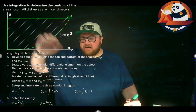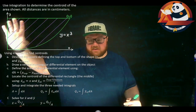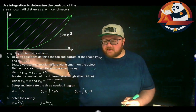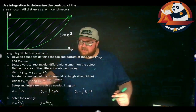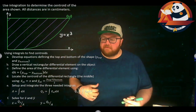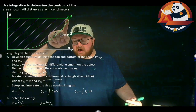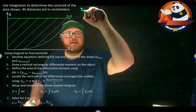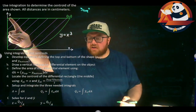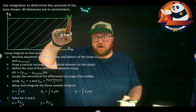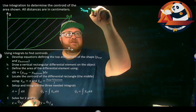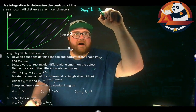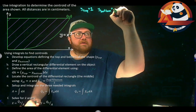Welcome everyone, I am JJ. This is example problem three, using integration to determine the centroid of this shape. The equation for the bottom is given as y equals x cubed. We have steps listed that we'll go through to tackle this. First, we need equations for the top and bottom of our shape. Our y_top is just equal to 1 — a horizontal line — and y_bottom equals x cubed.